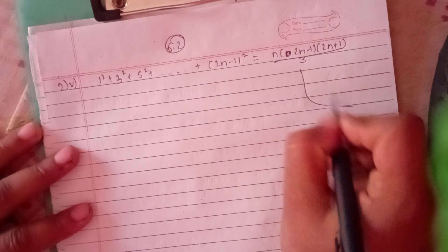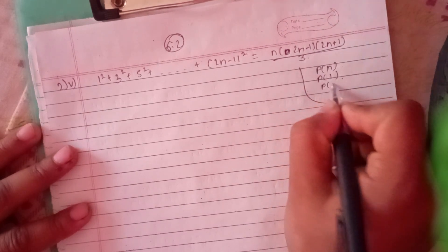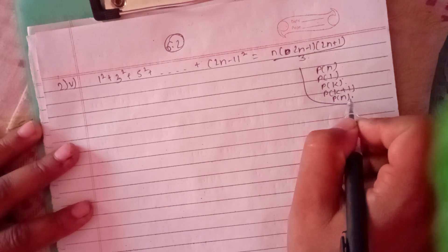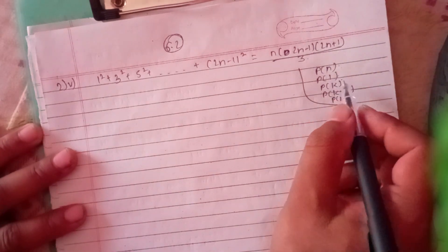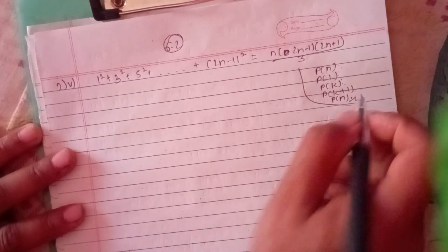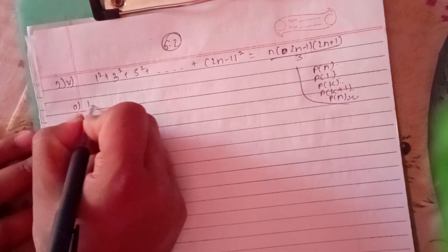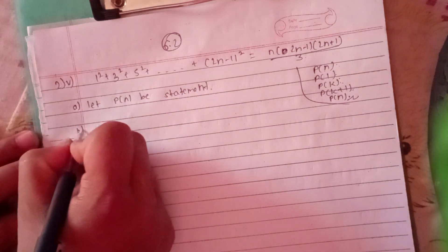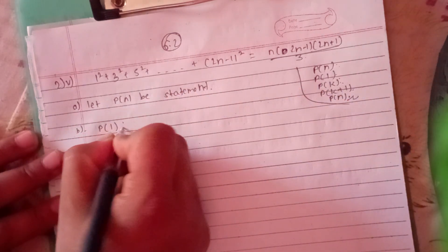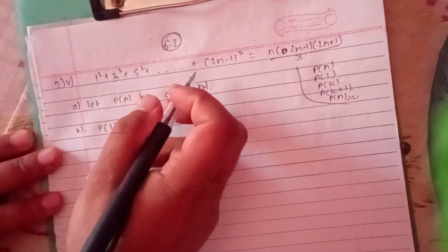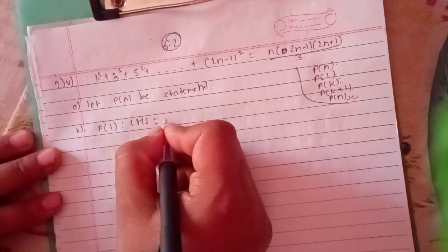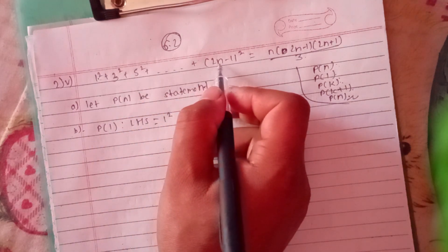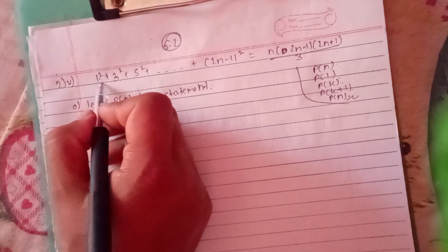The first step is to show P(1) is true. P(1) true means we verify the base case. Looking at the LHS for P(1), which is a series, the first term is 1 square.